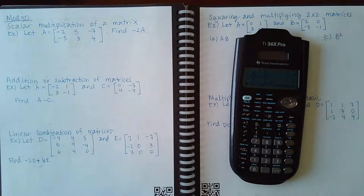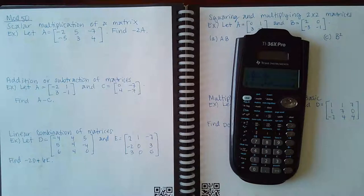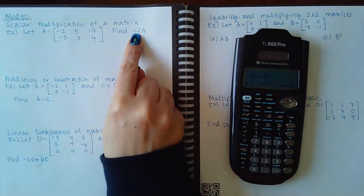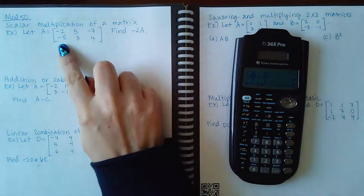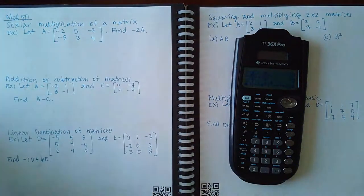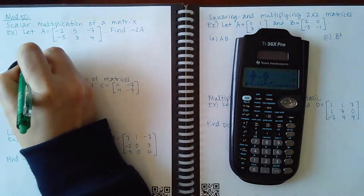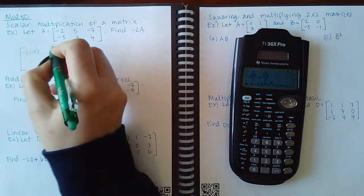One of the things you can do is multiply a matrix by a scalar. A scalar is just a number — it could be a real number or an imaginary number. How do you multiply negative two times the entire matrix A? You multiply every single entry by negative two.